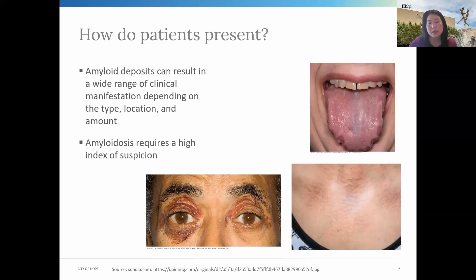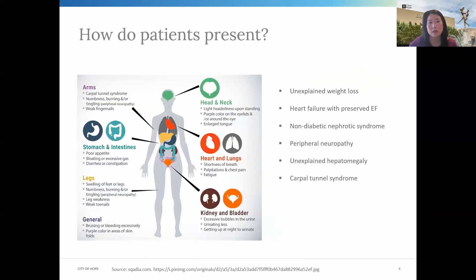But more commonly, patients are not going to be coming in with these obvious signs, and it requires a high level of suspicion. More often than not, patients are going to come in with vague constitutional symptoms, or even symptoms you might consider just to be common run-of-the-mill things — weight loss or fatigue, shortness of breath, nuanced edema, maybe some complaints of numbness and tingling in their hands and feet, chronic diarrhea — all things that may not necessarily trigger you to think about this rare condition.